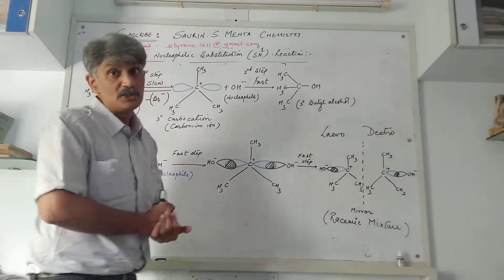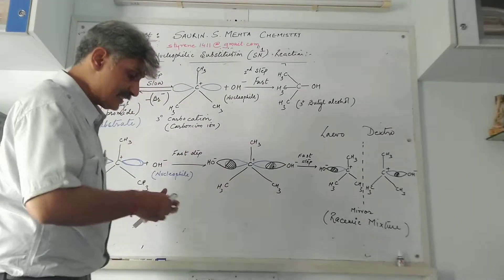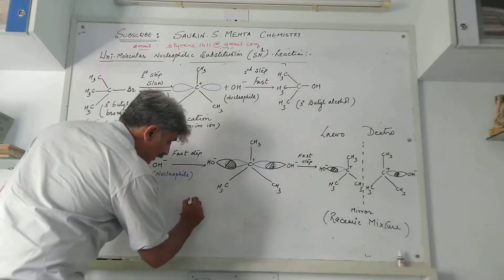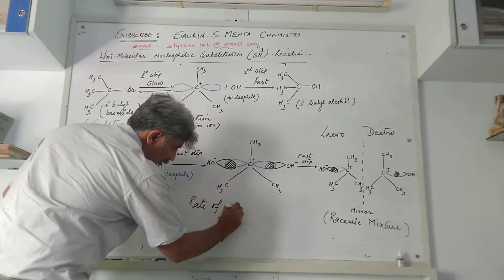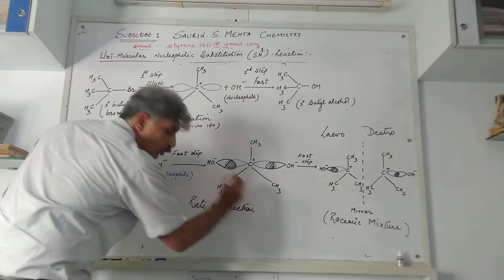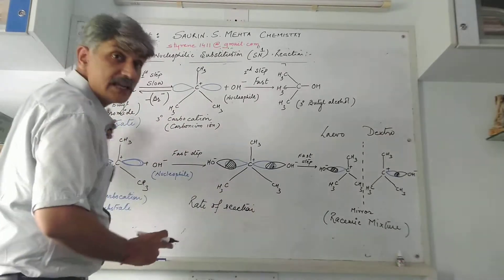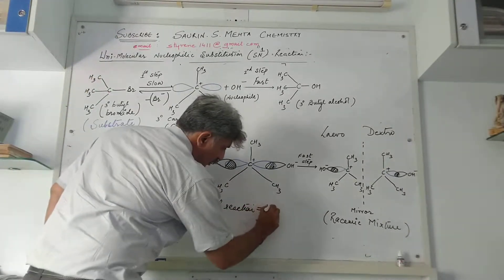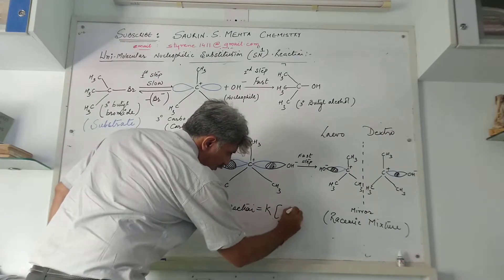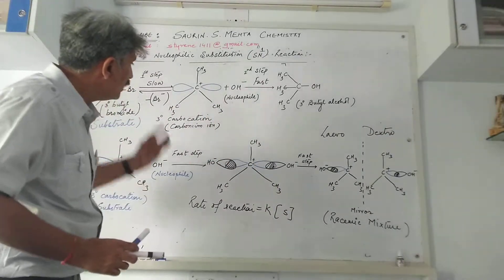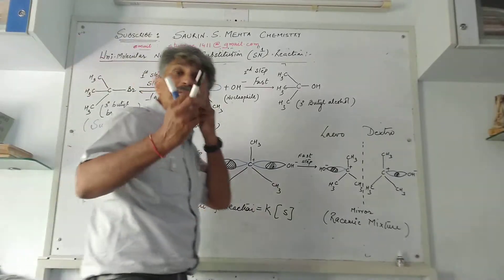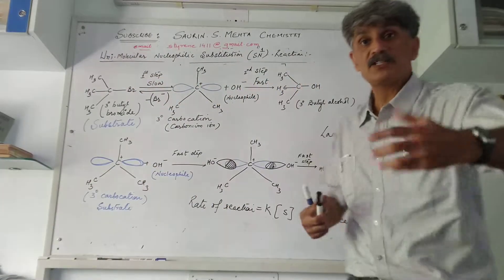According to chemical kinetics, the rate of reaction depends only on the concentration of substrate. Rate equals k times concentration of substrate. Here it is only substrate participation with respect to its concentration, and so it is your SN1 reaction mechanism.